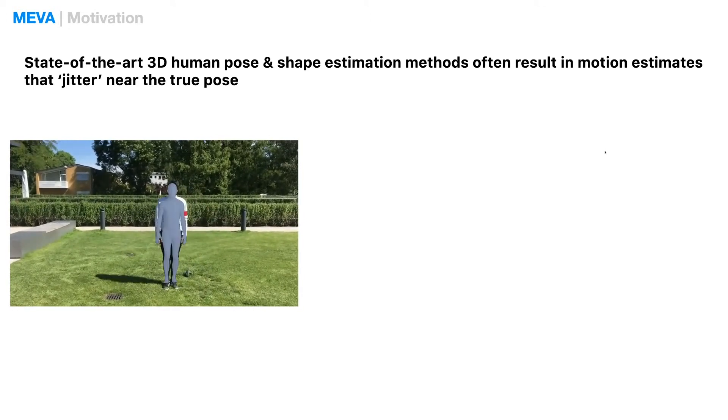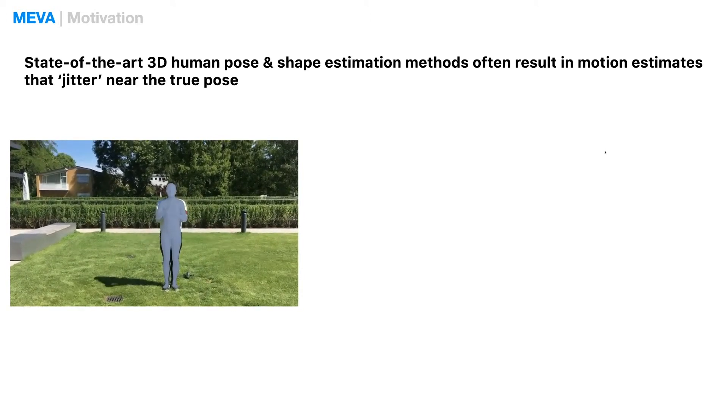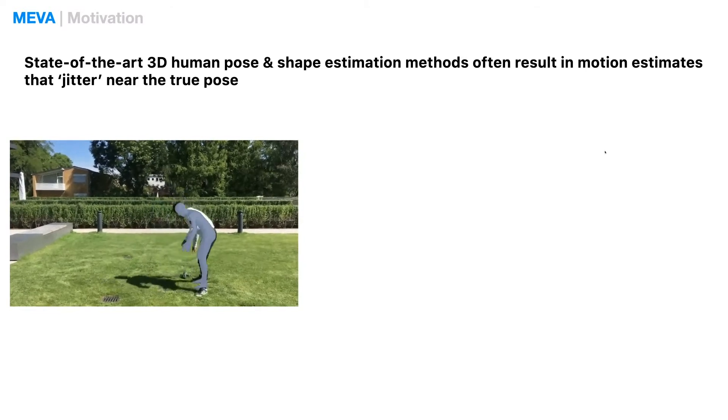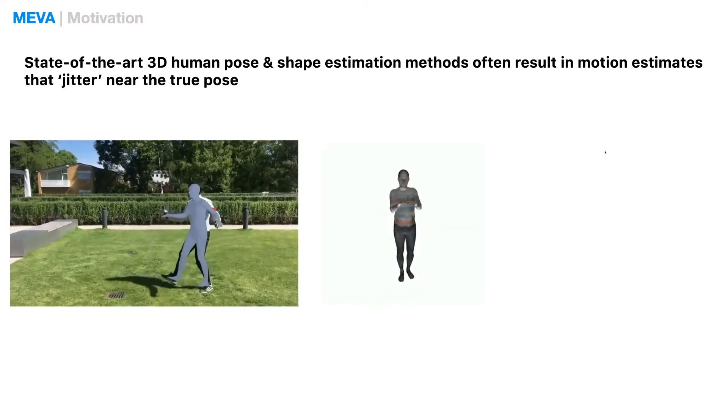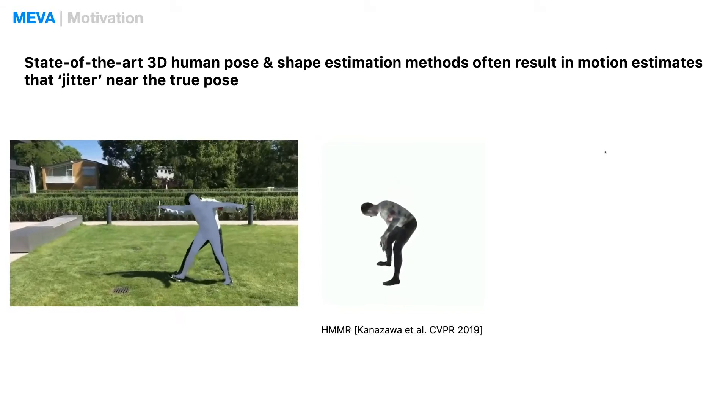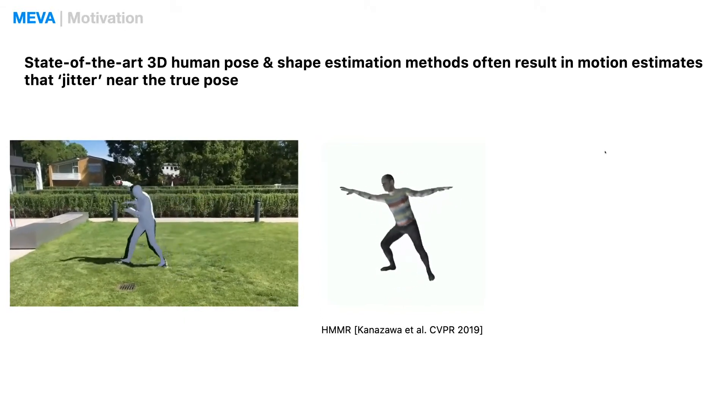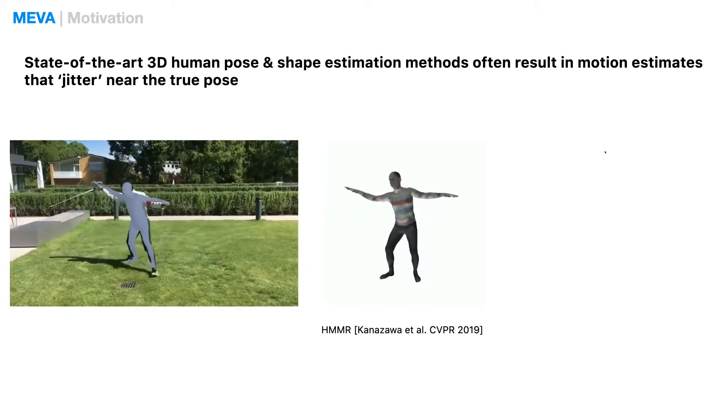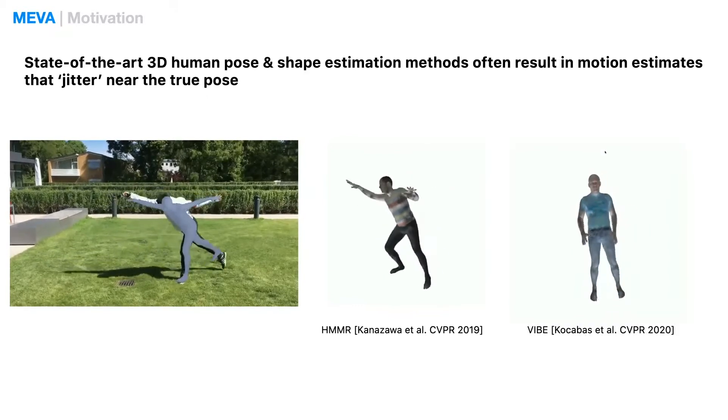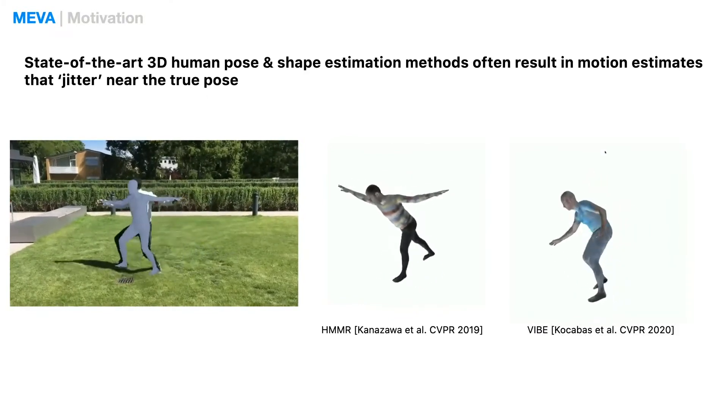Recently, state-of-the-art 3D pose estimation methods have been achieving amazing results. However, when we view these extracted human motions against a plane background as shown here, we can often see artifacts such as awkward gaits or jittering, resulting in an overall unnatural 3D motion recovery.